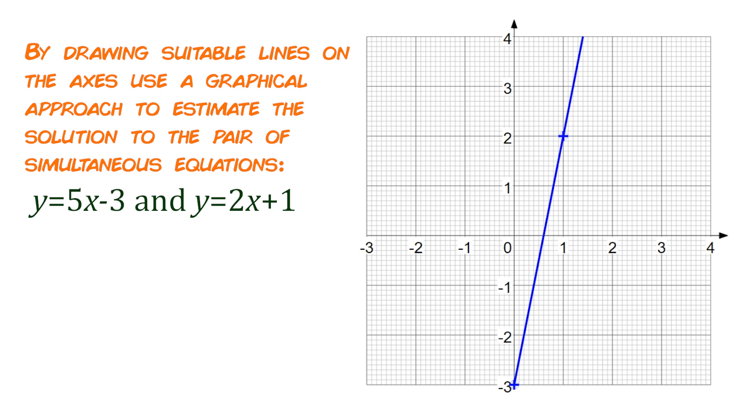The second line y equals 2x plus 1, I'll do the same thing. I know it's going to intercept the y-axis at 1 and we've got a gradient of 2, so I'm going to go across 1 on my x-axis and up 2 on the y-axis to there and I just plot that point there.